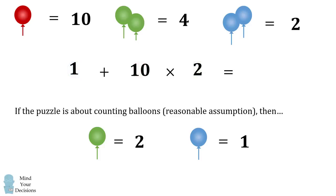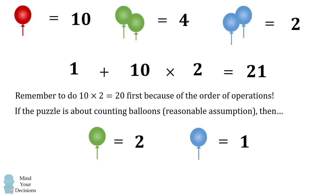This also presents a landmine for some people. You have to remember to do 10 times 2 which equals 20 first because of the order of operations. So we have 1 plus 20 and that equals 21.